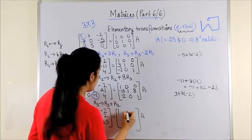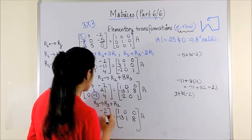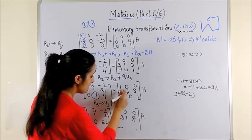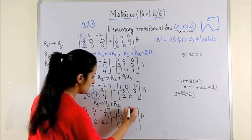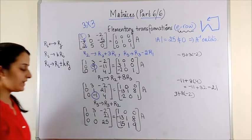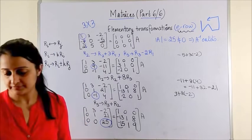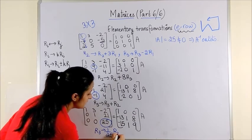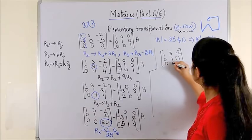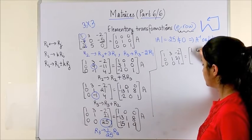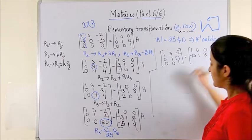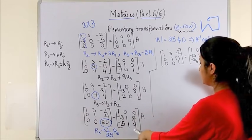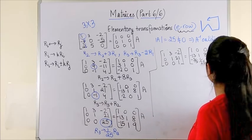The first and second rows stay as they are. The third row changes: on the left side it becomes 0, 0, 25; on the identity side the third row becomes minus 2 minus 13 = minus 15, then 1, then 9. Next, we convert 25 to 1 by applying rho 3 = (1/25) times rho 3, so rho 3 becomes 0, 0, 1. The first two rows stay as they are, and the last row of the identity becomes minus 15/25 = minus 3/5, then 1/25, then 9/25. A is copied as it is.